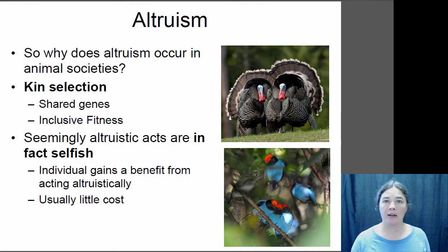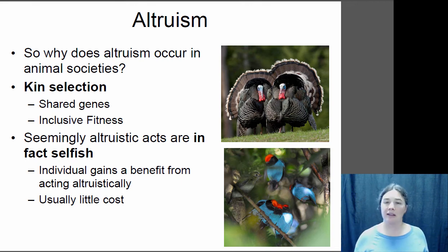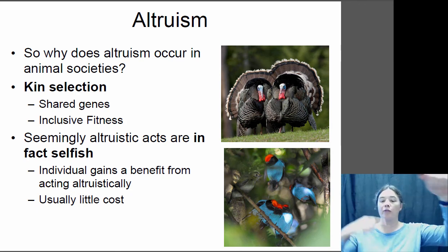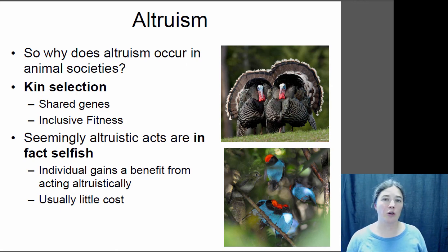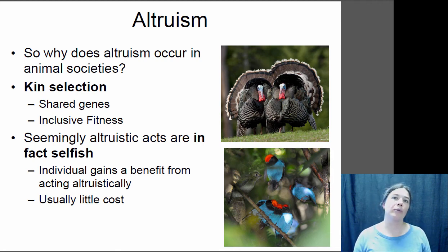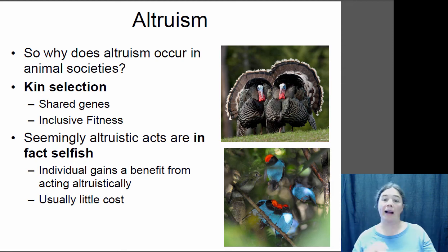Another way altruistic behaviors can arise is if they actually do have a benefit to the individual — so it's actually selfish, even if it doesn't look that way at the time. These red-capped manakins do a mating display where several males perform a beautiful coordinated dance, hopping over each other to impress a female. A female will only mate with the dominant male of a dance troupe, so all the backup dancers don't get to mate. But the only way to become the lead dancer is to work your way up through the ranks — if you're off by yourself you'll never mate with a female, but if you cooperate as a backup dancer for a while, eventually you may become the lead dancer and then mate with females.